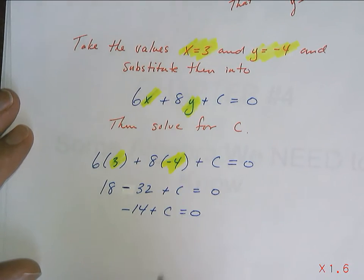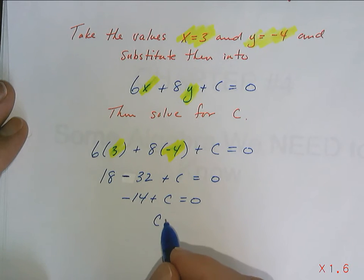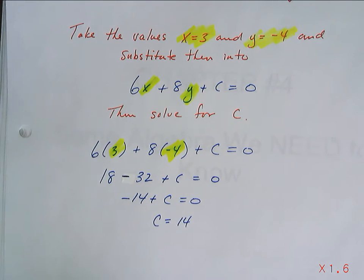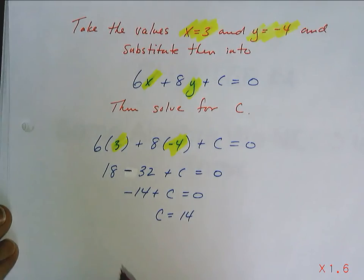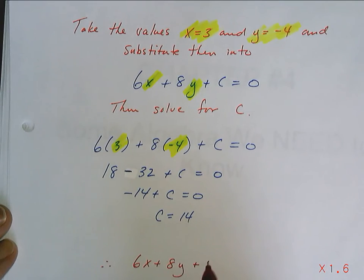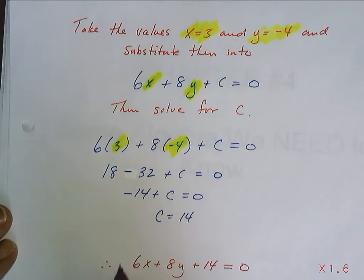And we've been doing questions like this on our Kahoots. We know that c equals 14. And that's the end of the question. So therefore, it's 6x plus 8y plus 14 equals 0.